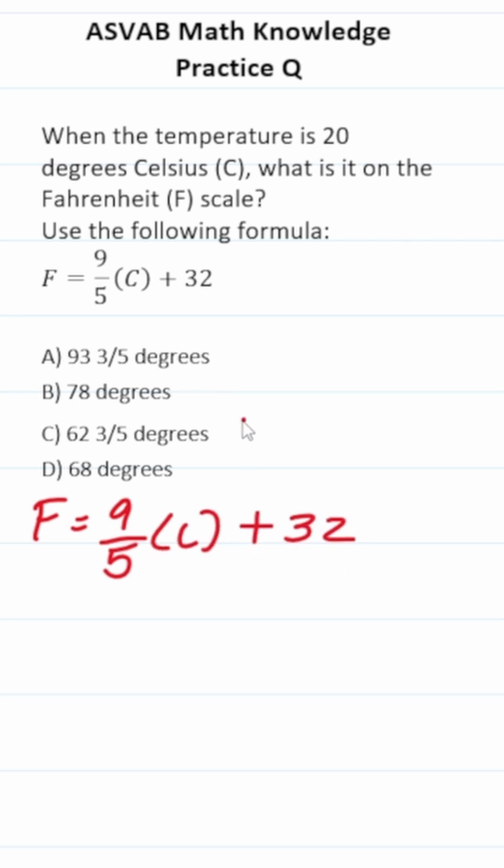So for this one, we're told that Celsius or C is 20. All we have to do in this case is plug it into this formula and solve accordingly. So this becomes 9 over 5 times 20 plus 32. According to your order of operations, you do multiplication before addition.